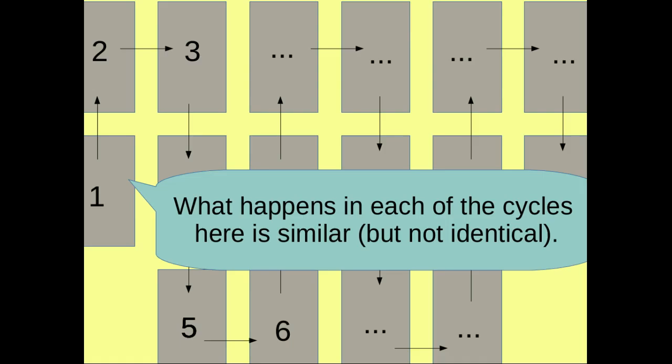What happens in each of these cycles here is similar but it's not identical. So each one has a slightly different aspect of the key and each one has a slightly different way of combining stuff. But broadly speaking what happens is the same.